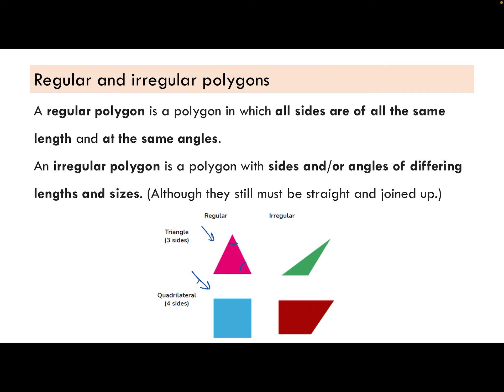Each one of these is 60 degrees. Each one of these is 90 degrees. They are regular. Regular is when they're all the same. Irregular is when the sides or angles are different lengths and different sizes.